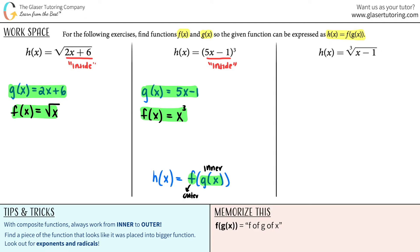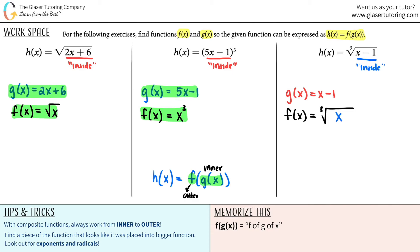Last one: h of x equals the cube root of x minus 1. Is there anything trapped inside something else, maybe a parenthesis or a radical? Yes — x minus 1 is trapped inside this cube root. So g of x equals x minus 1. For the outer function, rewrite what they gave you, erase the inner function, and put an x there. That gives you f of x equals the cube root of x. Those are your two functions.